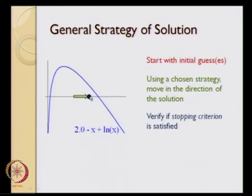The next item would be to verify if the stopping criterion is satisfied. In this particular case, the blue dot that we see over here is fairly far away from the actual solution. We have to go back and solve this particular problem once again using the chosen strategy, again move in the direction of the solution, again verify if the stopping criterion is satisfied, and keep doing this repeatedly. Once the stopping criterion is satisfied, this is going to be the numerical solution that we obtain.